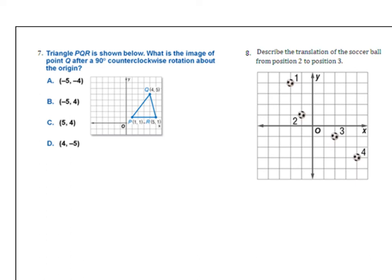Please pause and try number 7. We're working with point Q — 90-degree rotation, so multiply the y-coordinate by negative 1 and interchange. Answer is B. Number 8 says describe the translation of the soccer ball from position 2 to position 3. You describe a translation in terms of left/right and up/down — it goes right 3, down 2. You can write it in words or as a vector: positive 3, negative 2.